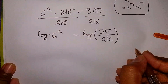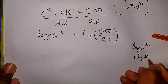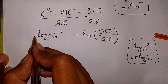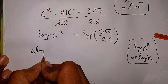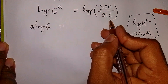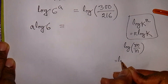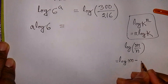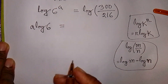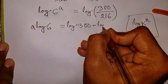Here we apply the rule that log of K to the power R is equal to R times log K. This power A will move to the front, so it can be written as A times log 6 equals log of (300 over 216). Then we apply the rule that log of (M over N) is equal to log M minus log N, giving us log 300 minus log 216.